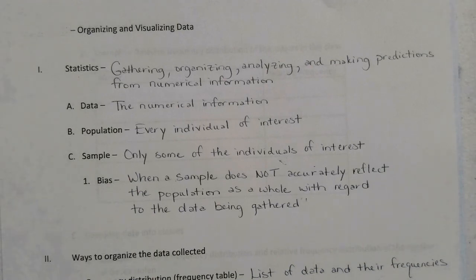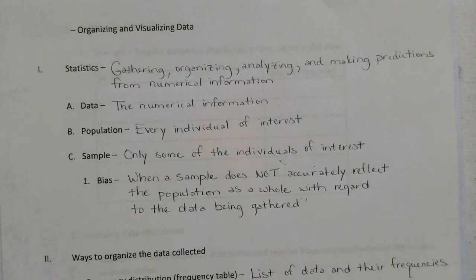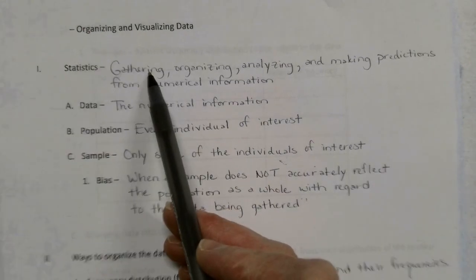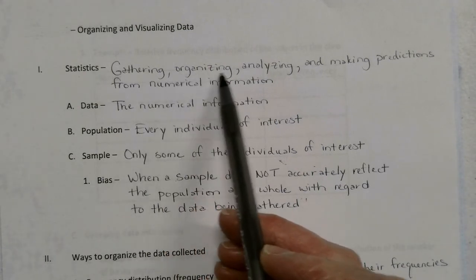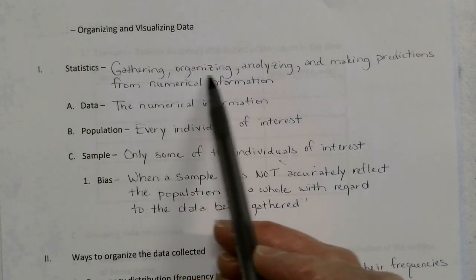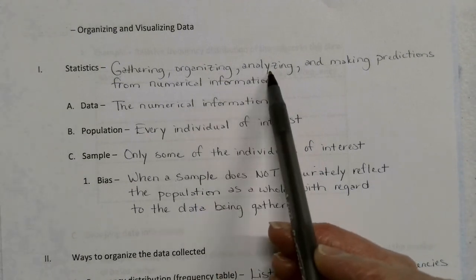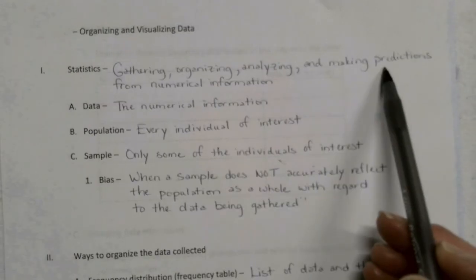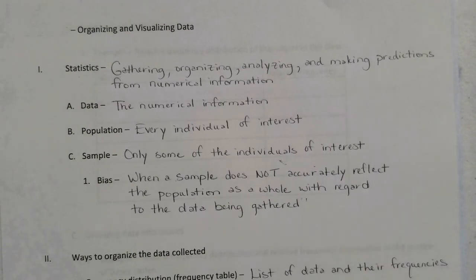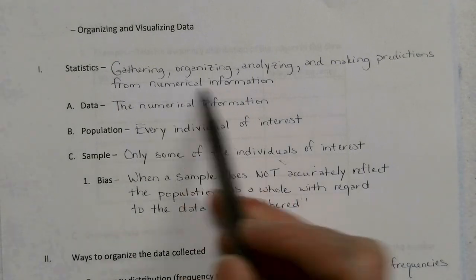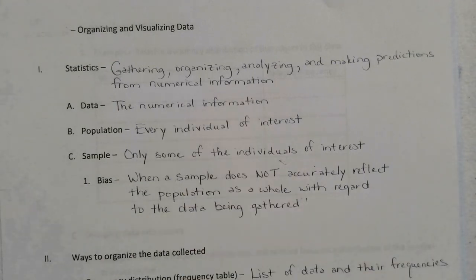So in other words, take for instance what's happening now with COVID-19. The CDC and the World Health Organization are gathering information. They are taking that information and organizing it into tables and graphs and charts. From those tables, graphs, and charts, they are analyzing the data. And the analysis of that data is allowing them to make predictions of where we can expect things to go from here. All of this coming from numerical data. This is statistics.